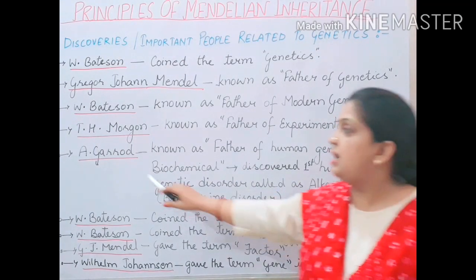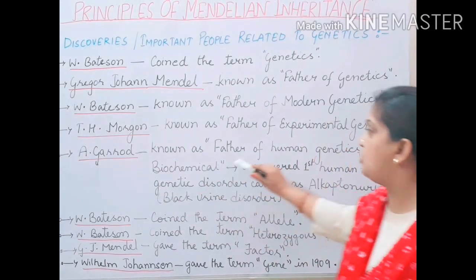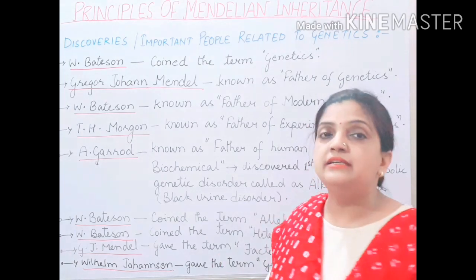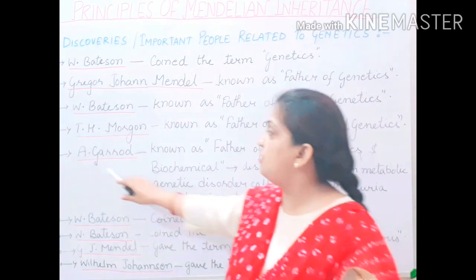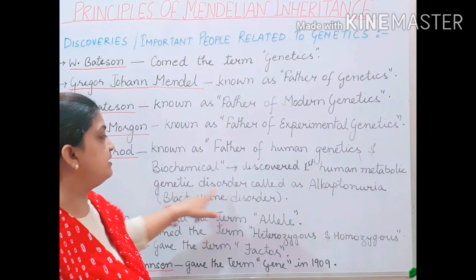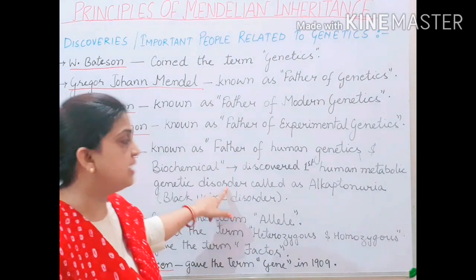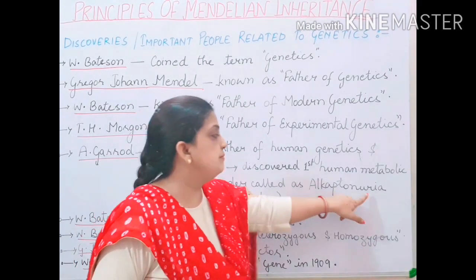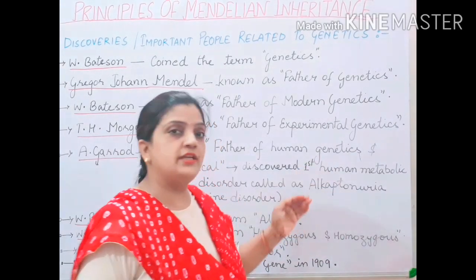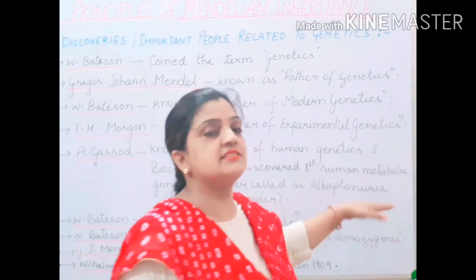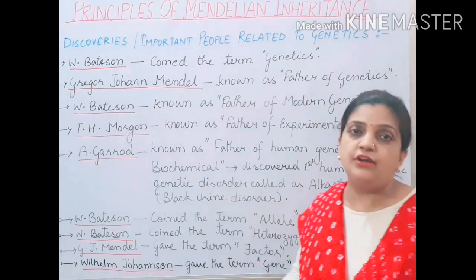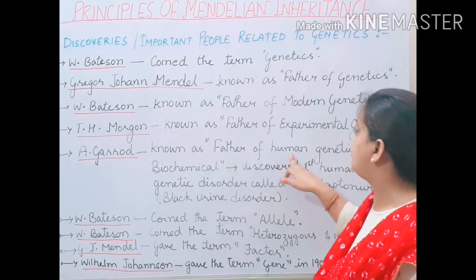Moving to the next name — A. Gerard, also known as the father of human genetics and biochemical genetics. All things related to human genetics were expressed by A. Gerard. He was the first person to discover the human metabolic genetic disorder named alkaptonuria, which is related to urine and is called black urine disease.